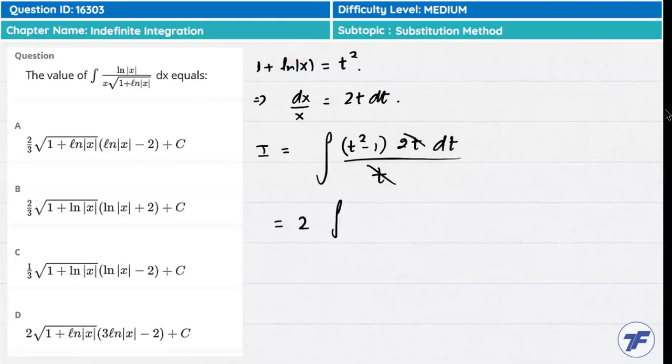We have the value of the integration of (t² minus 1) times 2t dt, which equals 2 times t³ divided by 3 minus 2t plus some constant.